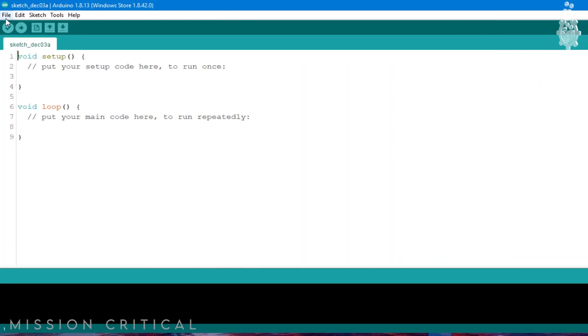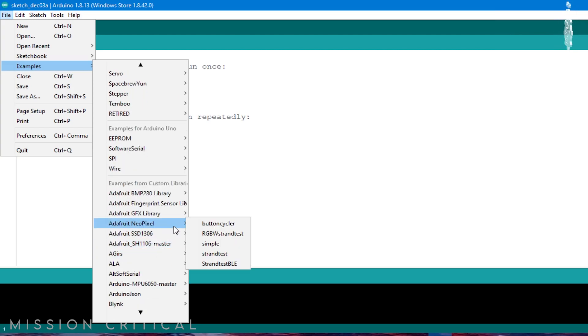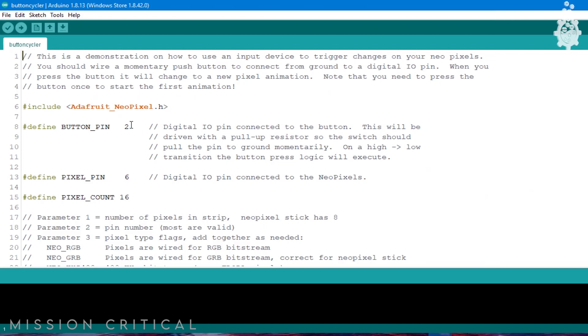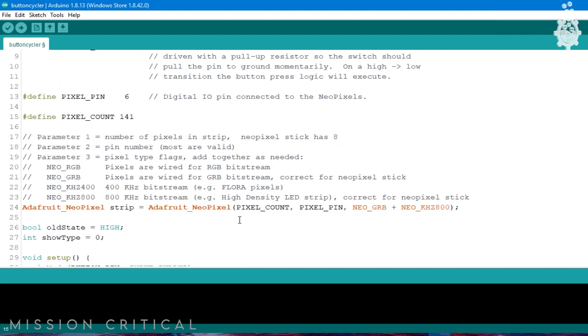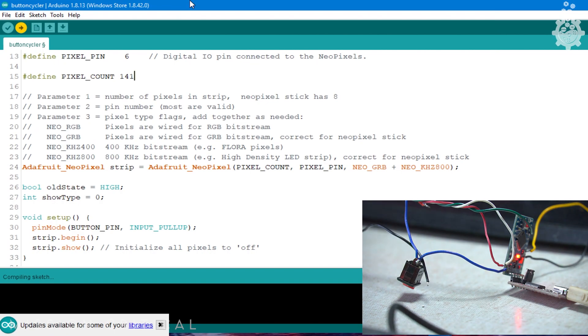And that's all for connection. For the code, I am using Adafruit's neopixel library and button cycle example. So the only thing that you need to change in the code is the number of LEDs in the circuit. So simply count the number of individual LEDs. For my case, it is 141 LEDs. Now let's upload the code and test everything.